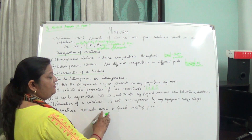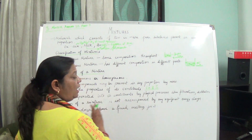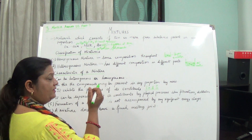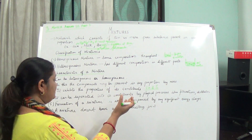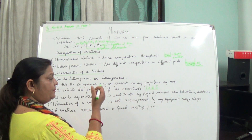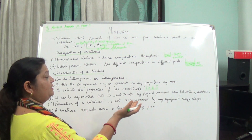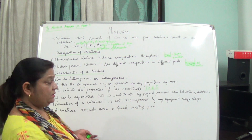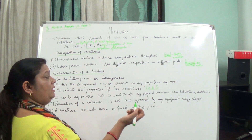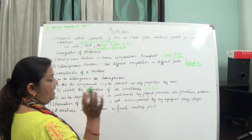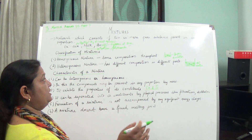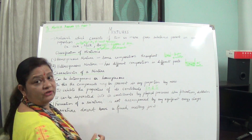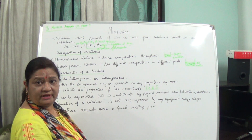A mixture does not have a fixed melting point. How can it have a fixed melting point? Because the components are not present in a definite proportion. Naturally, if the components are not in a definite proportion, the melting point will vary. Different substances are present and it also depends upon the quantity taken. So these are all the key points about mixtures. Hope you have understood. Good day, take care.